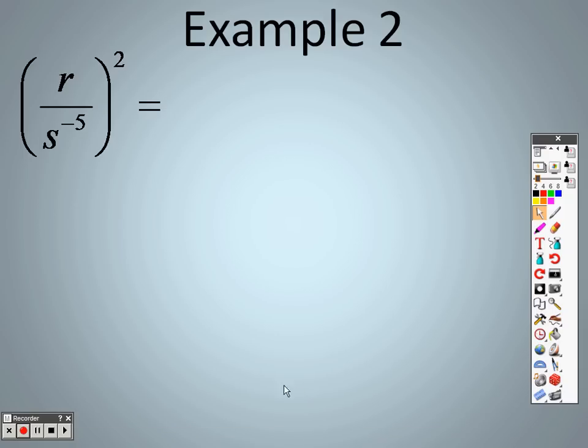So example 2 here, still on properties of exponents 6.1. This is like saying r of the first power here, so I can take that 2 through. So it's 1 times 2, so I get an r squared on top, and I still multiply here, so I get negative 5 times 2, which is negative 10.